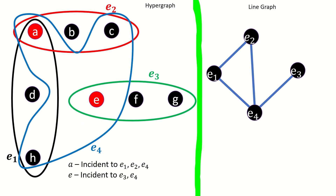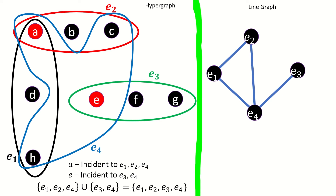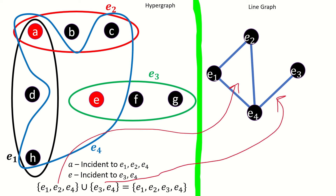E is incident to edges E3 and E4. Note how these sets of edges are not necessarily disjoint. However, their union is the vertex set of the hypergraph, because the vertices we built these edge sets from was a transversal. Each of these sets is a clique in the line graph, and together the sets are a clique covering of the line graph.